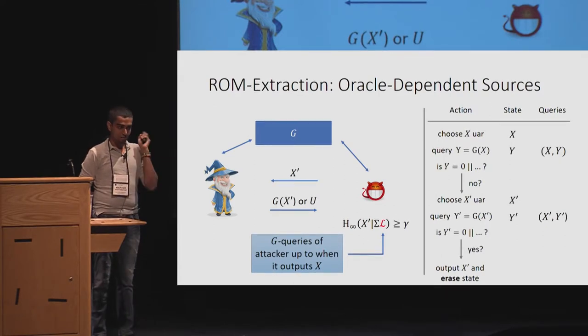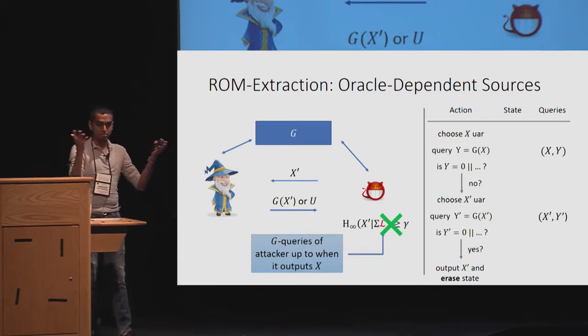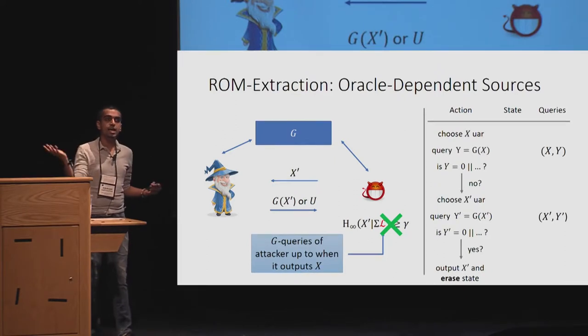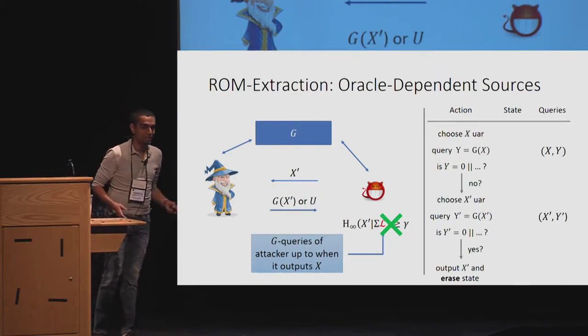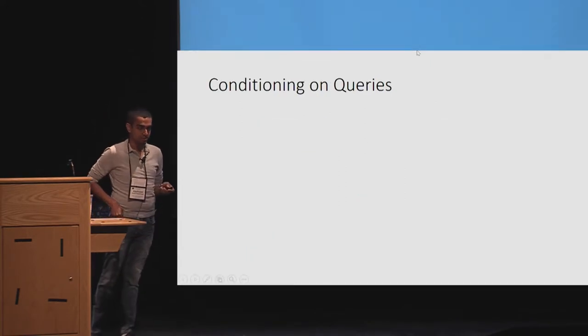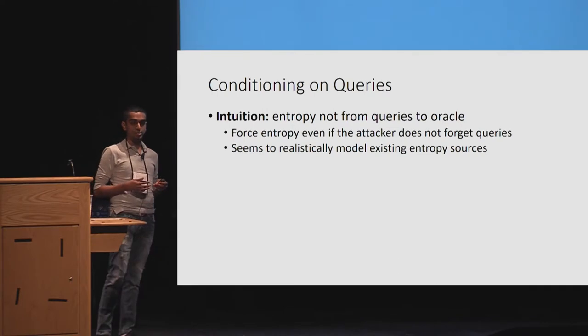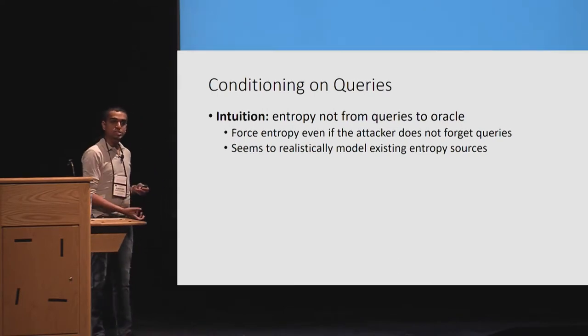And now, even if it clears the entire state, does it satisfy the condition? Actually, it doesn't. So the attacker does not work. So, voila, we actually came up with something. Or did we? What does it mean to condition from queries? The intuition here is the entropy does not come from queries to Oracle. And we force entropy even if the attacker does not forget the queries. And it seems to realistically model existing entropy sources.